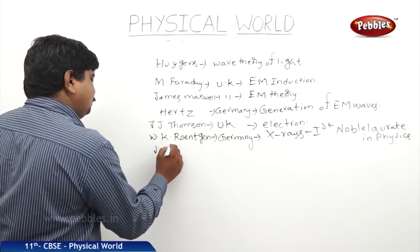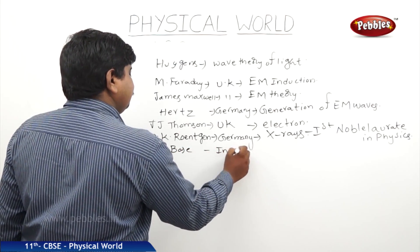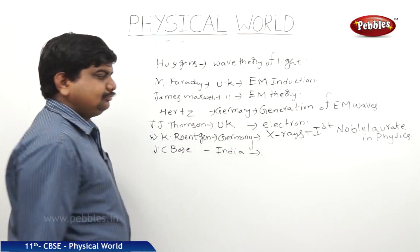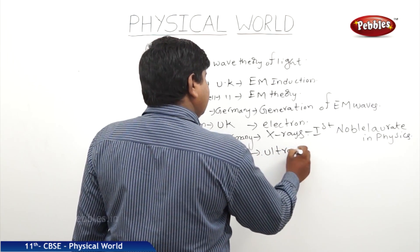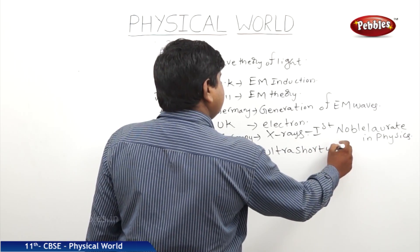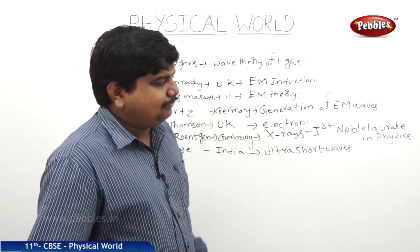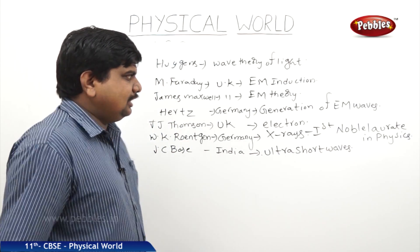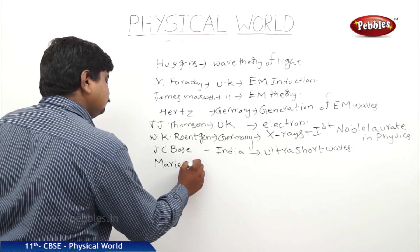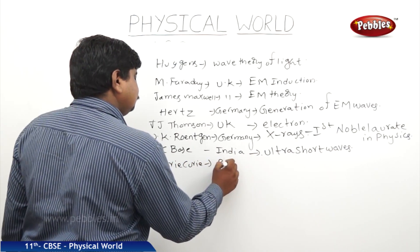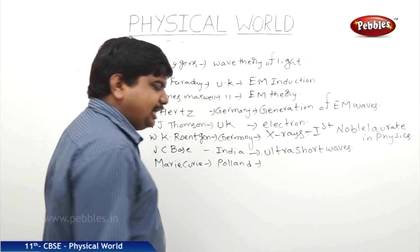Next one is Jagadish Chandra Bose from India, who has discovered the ultra short waves, which was helpful for the propagation of radio signals with the help of great Marconi. Next one is Marie Curie from Poland, she has discovered the natural radioactivity.